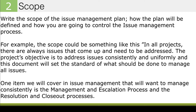Now let's go into the scope. Write the scope of the issue management plan — how will the plan be defined and how are you going to control the issue management process throughout the life of the project? For example, the scope could be: in all projects there are always issues that come up and need to be addressed. The project's objective is to address issues consistently and uniformly, and this document will set the standard of what should be done to manage all those issues. It's really important to have a document, define the steps, and have that consistency as you drive through your issues.